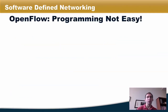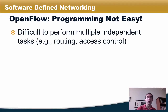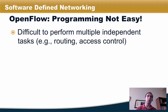It's worth recognizing that while OpenFlow makes programming networks possible, it does not make programming networks easy. It's difficult to perform multiple independent tasks using an SDN controller. For example, if you wanted to write a control program that performed routing and access control together, how do you make sure that the two independent modules don't interfere with one another or tell the switches to do things that conflict with one another?